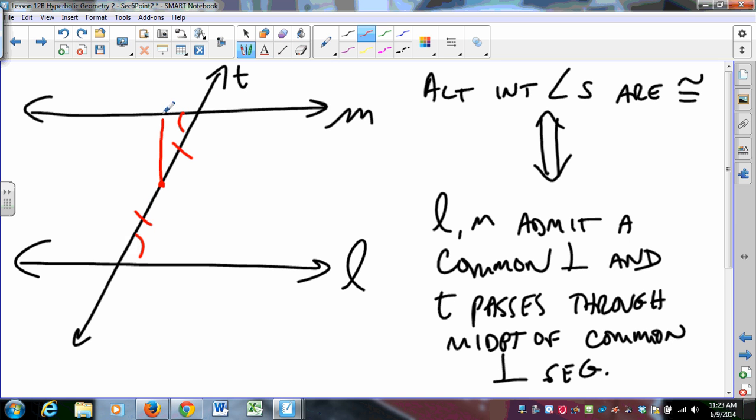That would mean that the two red triangles are congruent by angle angle side, that still holds true even in the hyperbolic plane, which means that this angle would be congruent to that one. And if that's the case, then I know that this is one line, we've got a linear pair, so we've got one line going through there and those would be congruent. So we would have the common perpendicular and T passing through the midpoint of the common perpendicular segment.